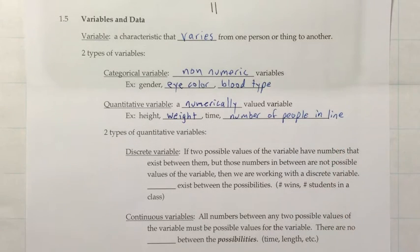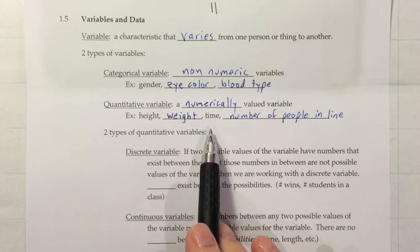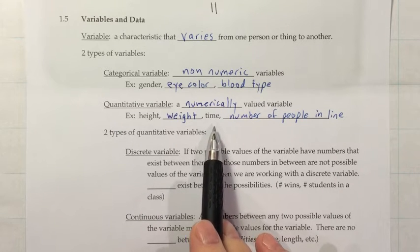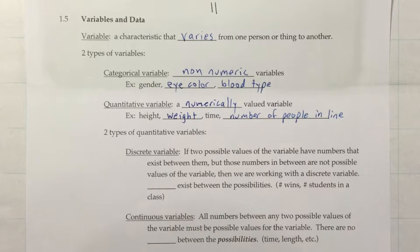And then one that's a little different may be the number of people in a line. And that one's different because the number of people in a line could be three people or four people, but it can't be 3.87 people. So, we have some numbers that can't possibly be values for that variable. Whereas, that's a little bit different from time, where something could take three seconds or four seconds, but it could also take 3.87 seconds. So, because of that kind of difference in those quantitative variables, we say there's two types of quantitative variables as well.